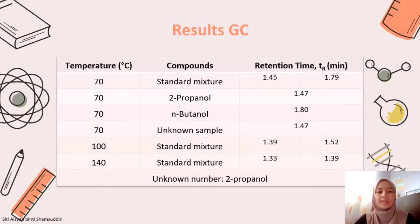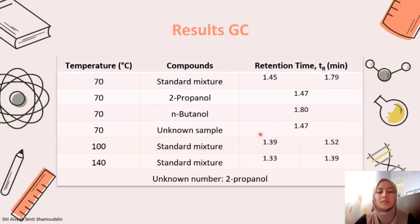My name is Citi Aisha Binti Samsuddin and I will be explaining the results for experiment 5, gas chromatography. The standard mixture consists of 2-propanol and N-butanol. For the unknown sample result, we obtained the same retention time as 2-propanol, which is 1.47 minutes. This means the unknown sample is 2-propanol. Overall, the retention time for 2-propanol is much faster than N-butanol. As the temperature increased, the retention time decreased.